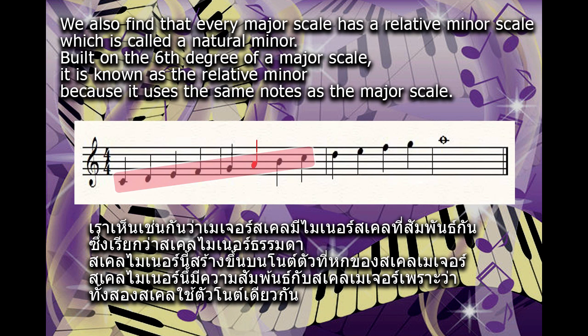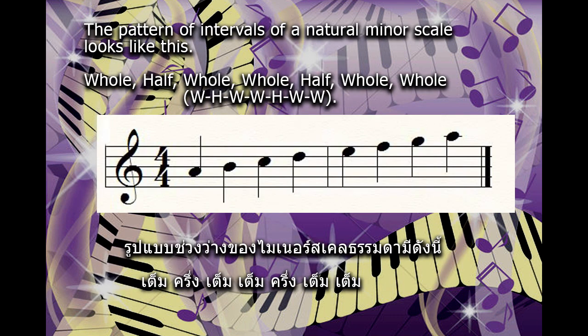We also find that every major scale has a relative minor scale which is called a natural minor. Built on the sixth degree of a major scale, it is known as the relative minor because it uses the same notes as the major scale. The pattern of intervals of a natural minor scale looks like this: whole, half, whole, whole, half, whole, whole.